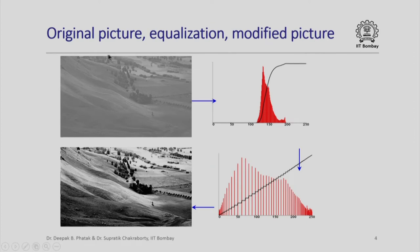You will remember that we have seen a large black and white image, seen how its histogram was limited to a very small portion of the total area, and this was the cumulative distribution function. When we applied the histogram equalization technique and stretched the histogram, this is how the histogram looked, and this is how the cumulative distribution function looked.